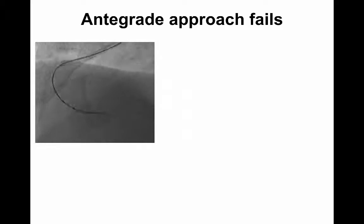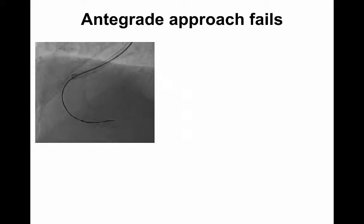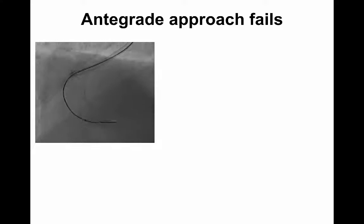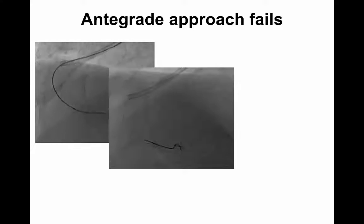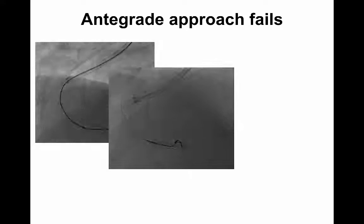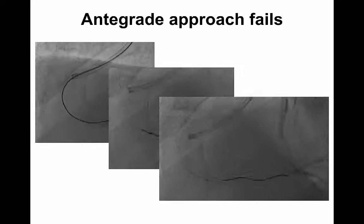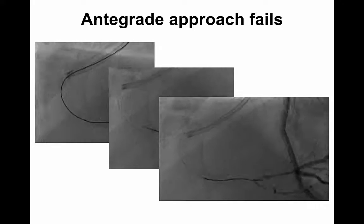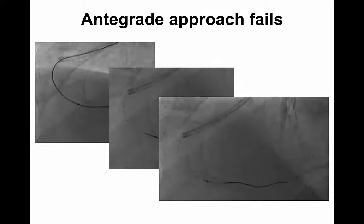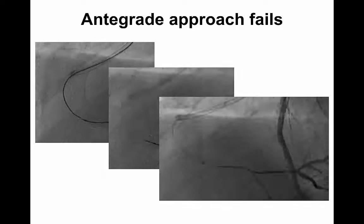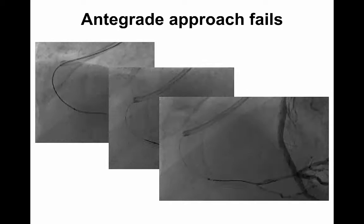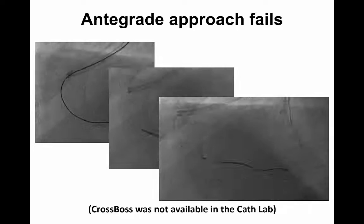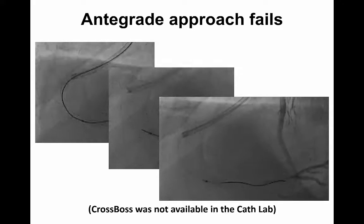We tried first a true-to-true approach antegradely but the wires consistently tracked outside the stent, even when we tried to do a knuckle. When we finally managed to go through the in-stent in what we believed was a true-to-true fashion, we found out that the wire was subintimal. The CrossBoss was not available that day in the cathlab.